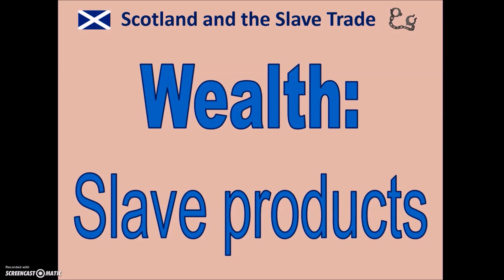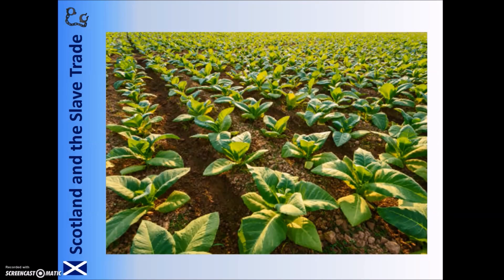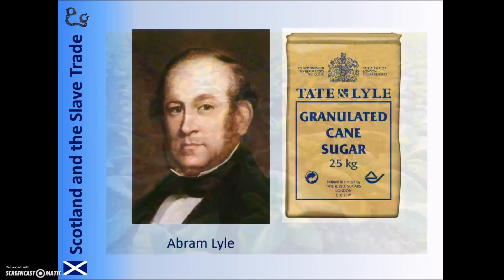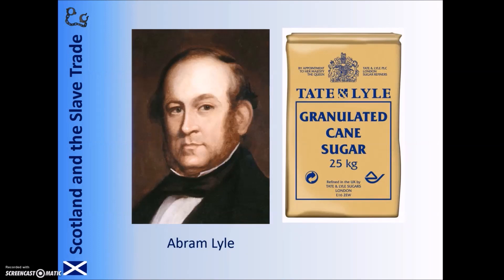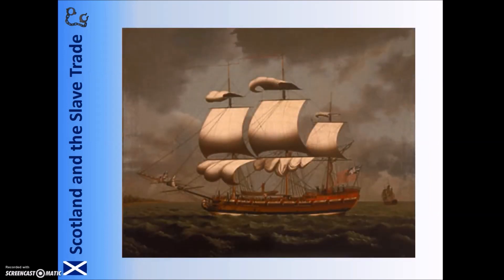Other Scots didn't directly own slaves or plantations, but nevertheless their wealth owed itself to the existence of slavery. Numerous Scots established businesses at home and abroad that sold slave produce or were connected in other ways to the trade. The merchants of Glasgow made fortunes from selling various products, most famously tobacco. The sugar company Tate and Lyle, which is still in existence today, was set up by Abram Lyle from Greenock, with much of its wealth from sugar grown by plantation slaves. Another prominent example was the Bank of England, established by a Scot named William Patterson, with the intention of funding businesses including those in the slave trade. All of this created much wealth in Scotland for large numbers of people.